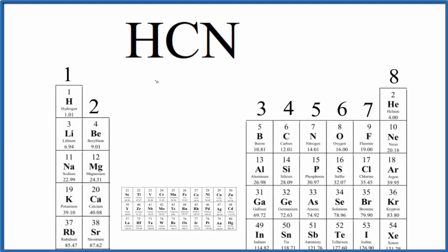In this video, we'll find the number of valence electrons for HCN, hydrogen cyanide. We have the periodic table, and it's organized by the groups, the number of valence electrons in each group.